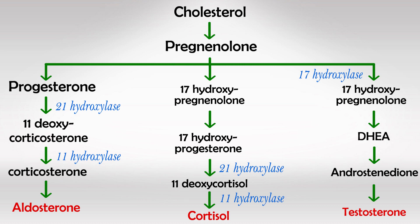The third and final most important enzyme is 17-hydroxylase. This enzyme simply hydroxylates — or adds a hydroxyl group to — pregnenolone or progesterone. So it converts pregnenolone into 17-hydroxypregnenolone, or progesterone into 17-hydroxyprogesterone. This enzyme is very important, as we'll explain in a moment.